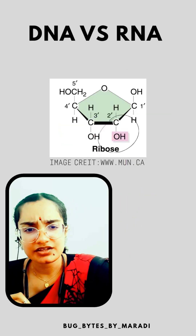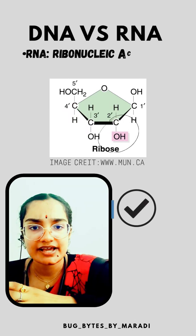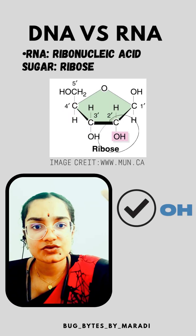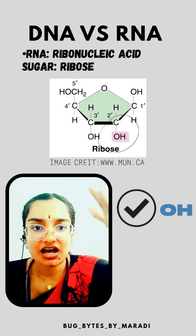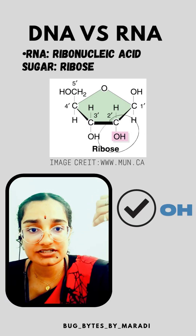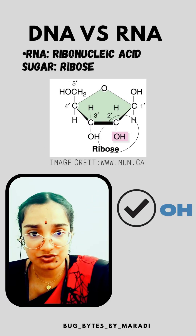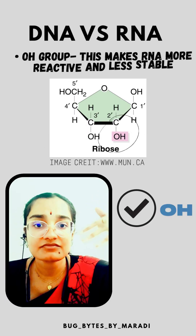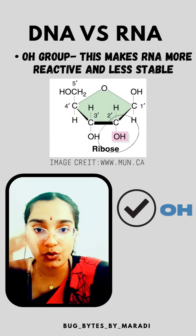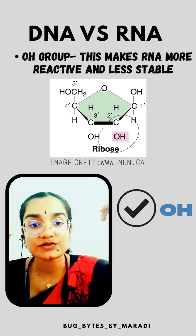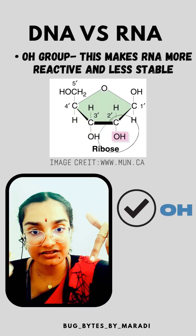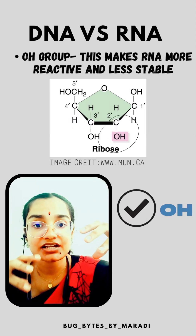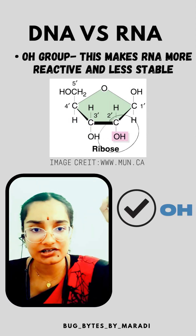Meanwhile, ribonucleic acid — RNA — contains the sugar ribose. In ribose, the second prime carbon atom has a hydroxyl (OH) group. This makes RNA more reactive and less stable, which enables RNA to perform certain catalytic and regulatory functions, but makes it unsuitable for long-term storage.